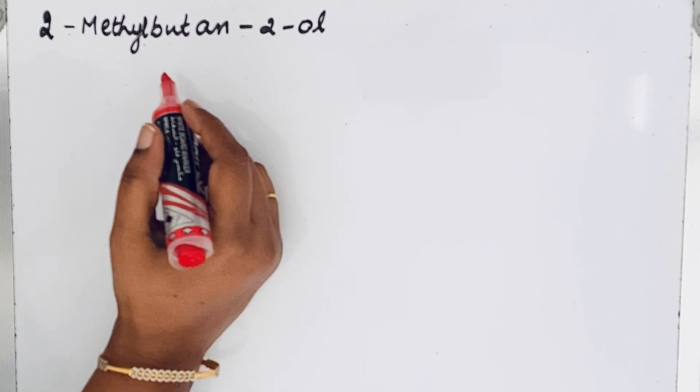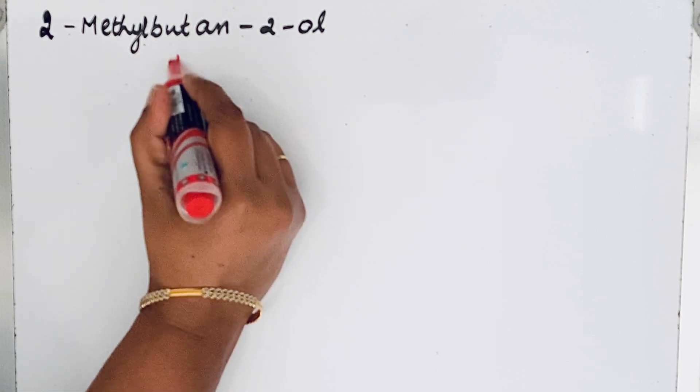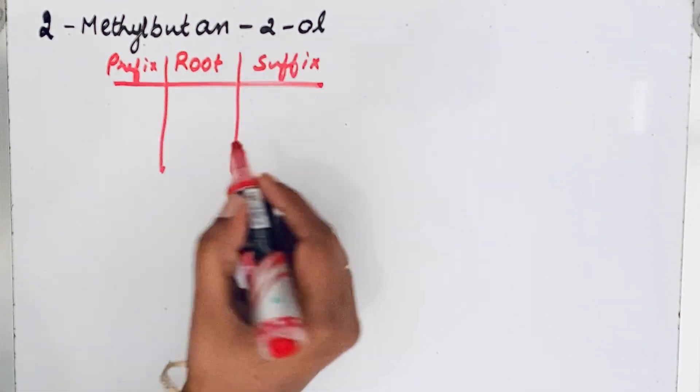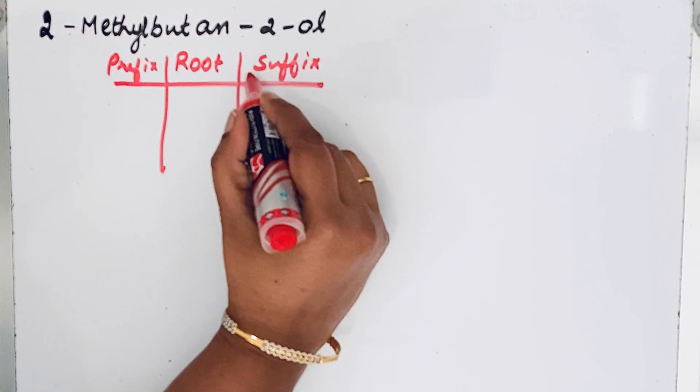To write the structure, first let us draw that format: root, prefix, and suffix. We have for prefix and suffix, primary and secondary.